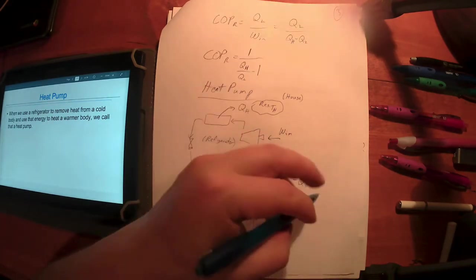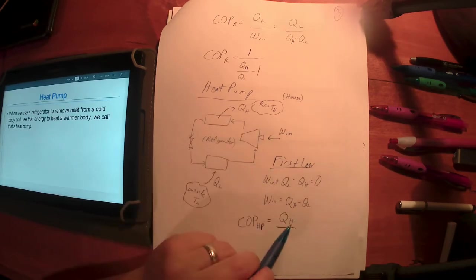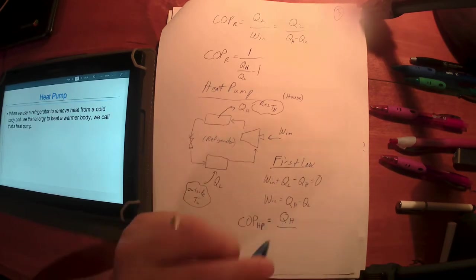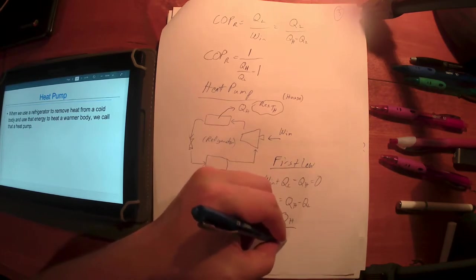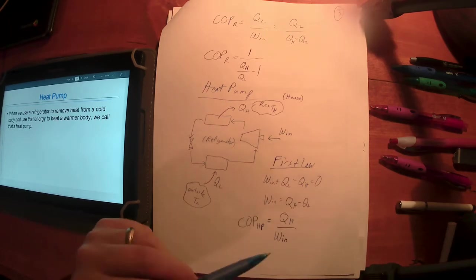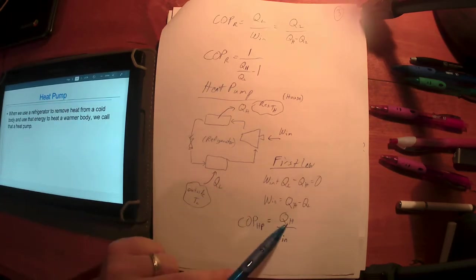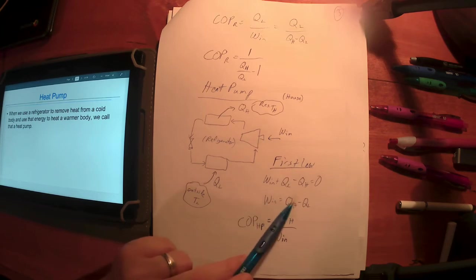The goal of a heat pump is to heat the high temperature source, so QH is our numerator. The denominator is the quantity that we have—what's required. This is what you want, this is what you have to do to get it. You need the same units on top and bottom, whether BTU over BTU, kilojoules over kilojoules, BTU per second over BTU per second, or watts over watts.